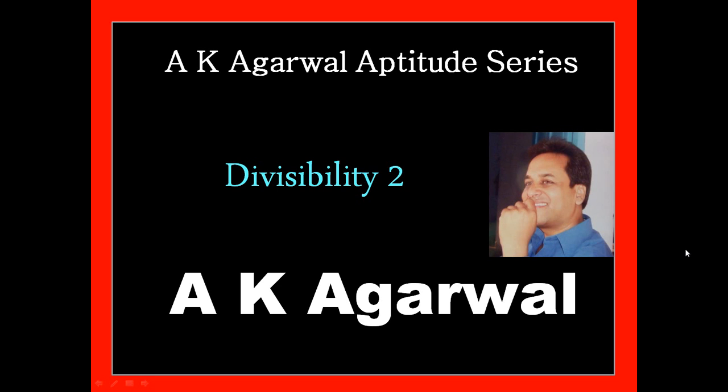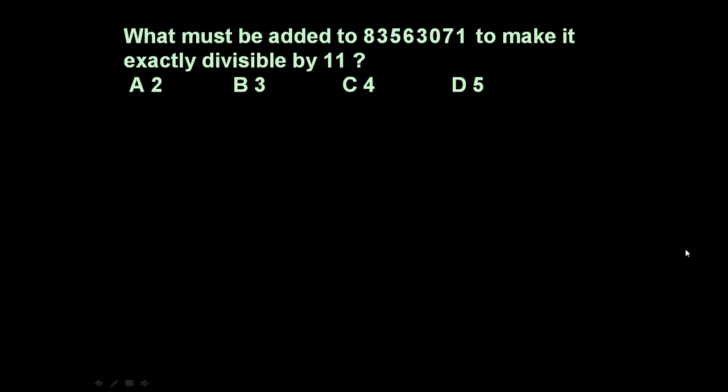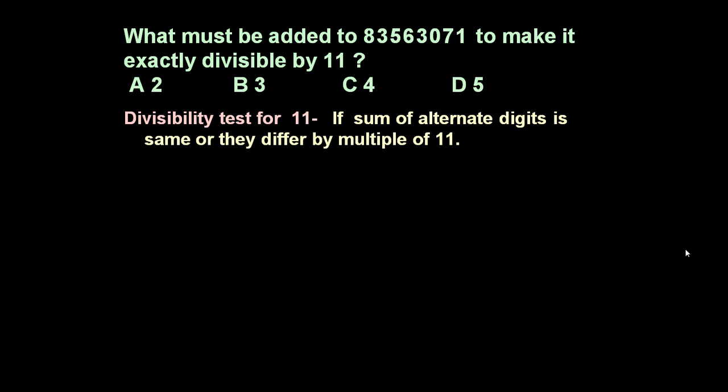Hello friends and welcome to AK Agrawal Aptitude Series. In this session we are going to learn some techniques for solving problems on divisibility. The given problem is: what must be added to 83563071 to make it exactly divisible by 11? First, let us check the number using the test of divisibility.